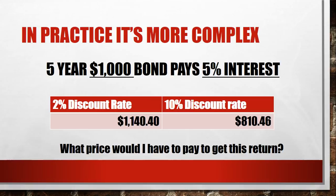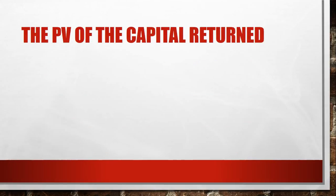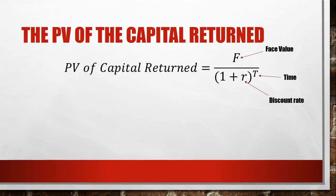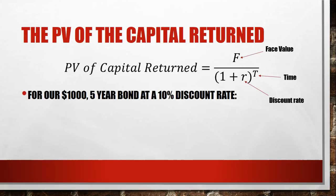Now you know the theory — let's look at actually doing the calculation. We're going to start with the present value of the capital return, which is one of the two parts. This has a formula that looks complicated but actually isn't. The face value goes on the top — that's a thousand dollars. The discount rate is converted from a percentage into a decimal, and then you've got T, which stands for time.